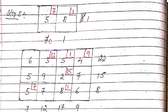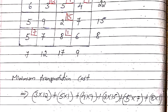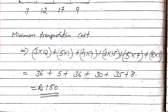The allocated positions are: cost 3 × 12, cost 5 × 1, cost 4 × 9, cost 2 × 15, cost 5 × 7, and cost 8 × 1. The minimum transportation cost is calculated as: 3×12 + 5×1 + 4×9 + 2×15 + 5×7 + 8×1 = 36 + 5 + 36 + 30 + 35 + 8 = 150 rupees. That is the final solution and the minimum transportation cost. Thank you.